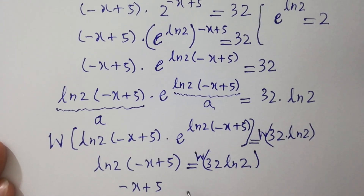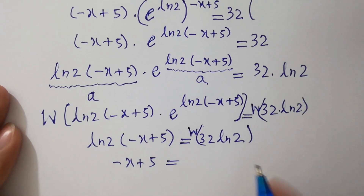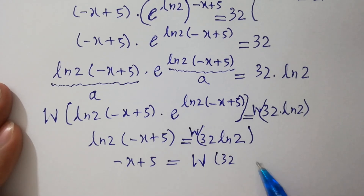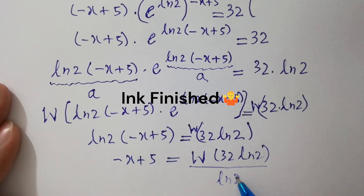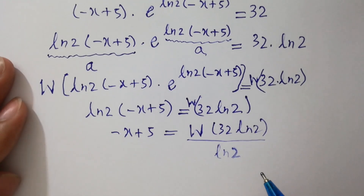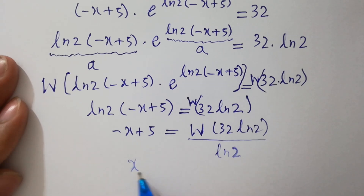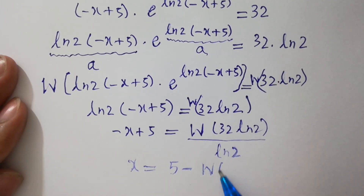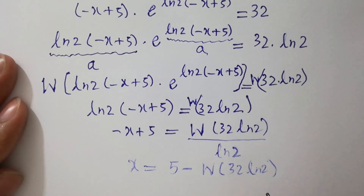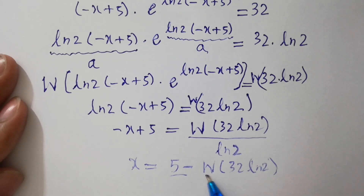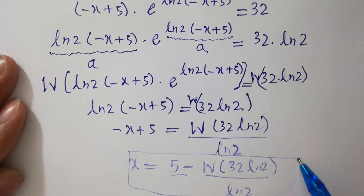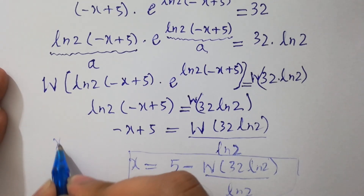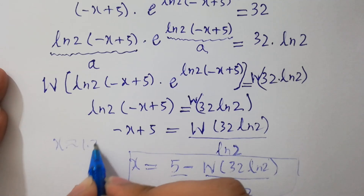So minus x plus 5 equals W(32 log 2) divided by natural log 2, which means x equals 5 minus W(32 log 2) over log 2. This is the correct answer, and from internet resources, x is approximately 1.716.